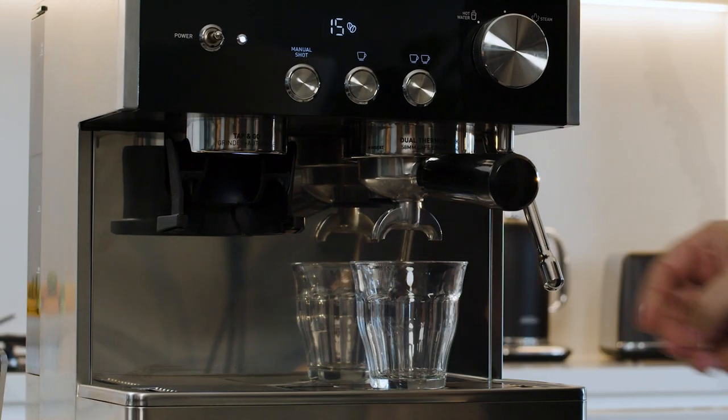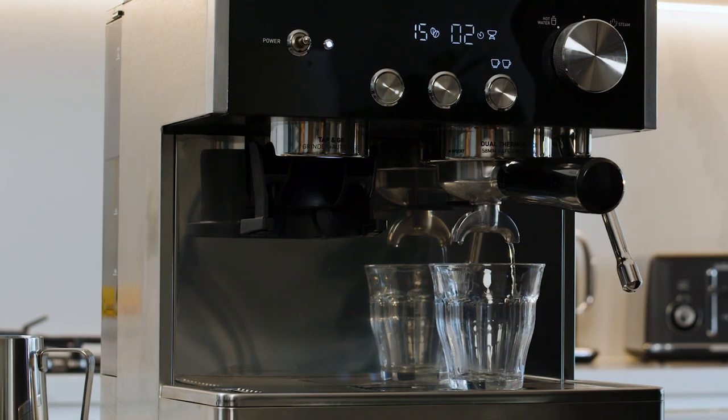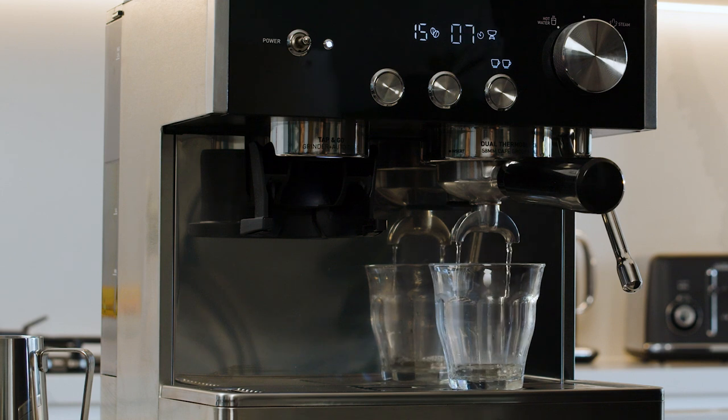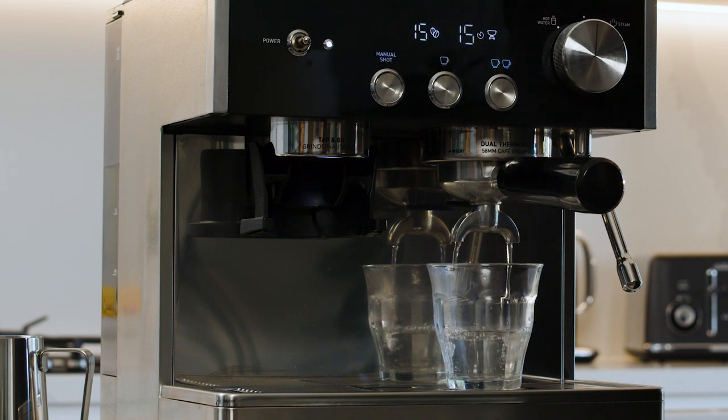Put a cup under the group head and press the two cup button. You'll notice that the water will start flowing from the group head. For the first few seconds the pump will make a louder than usual noise as it begins pumping water through. Once finished, the machine will return to the ready state.